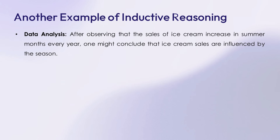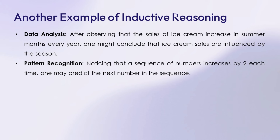Examples for inductive reasoning. Number 1: data analysis — after observing that the sales of ice cream increase in summer months every year, one might conclude that ice cream sales are influenced by the season. Number 2: pattern recognition — noticing that a sequence of numbers increases by 2 each time, one may predict the next number in the sequence.